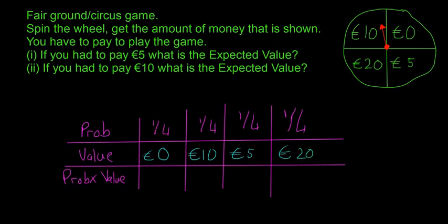So now the probability times the value is our next thing. This is going to be 0 because 0 times anything is 0. And this is going to be 2.5, this is going to be 1.25, and this is just going to be 5. So that's when you multiply 20 by 1 quarter, 5 by 1 quarter, 10 by 1 quarter, and 0 by 1 quarter.